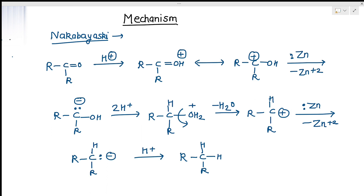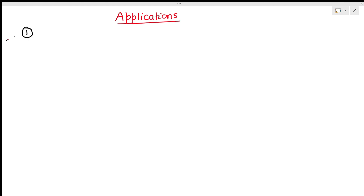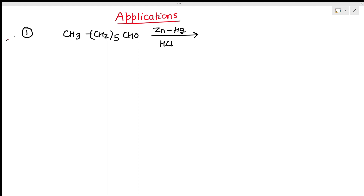This is the whole mechanism of the Clemmensen reduction. Now see its applications. First, it can be used for the reduction of aliphatic and mixed aliphatic-aromatic carbonyl compounds. For example, CH3(CH2)5-CHO treated with Zn/Hg and HCl gives CH3(CH2)5-CH3.